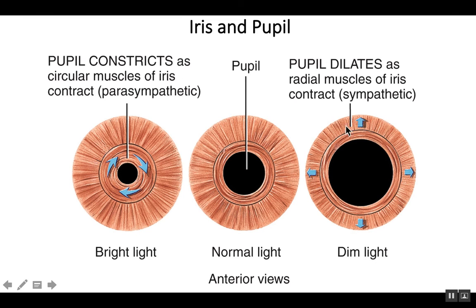And in response to dim light, the pupil will dilate by contraction of what's called the radial muscles, because they kind of radiate out from that circular muscle. And that, in essence, opens up the pupil, dilates the pupil.